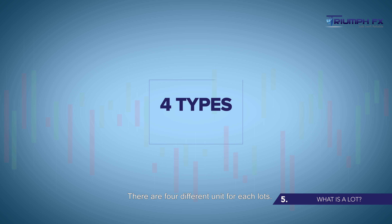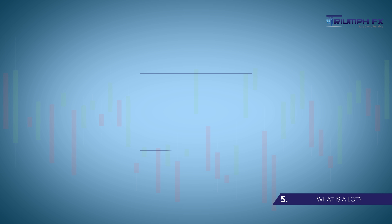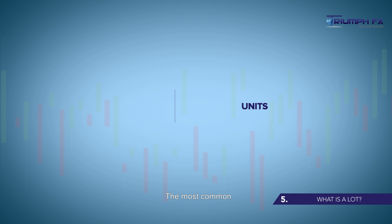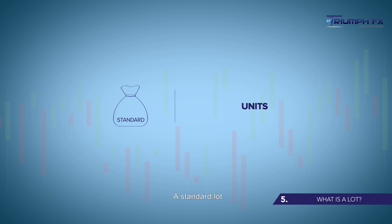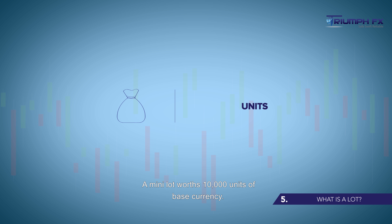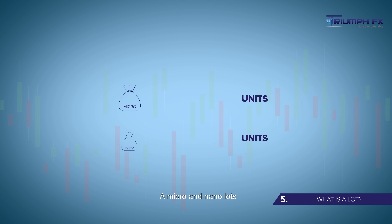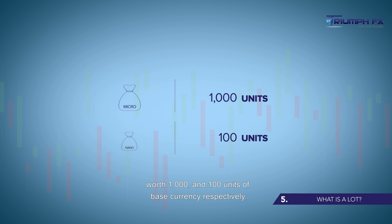There are four different units for each lot. The most common is a standard lot, with 100,000 units of base currency. A mini lot has 10,000 units of base currency. A micro and nano lot have 1,000 and 100 units of base currency respectively.